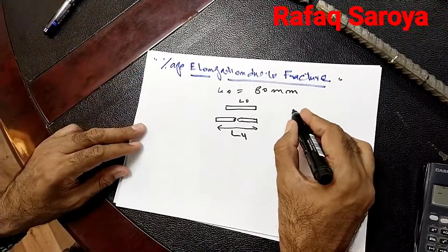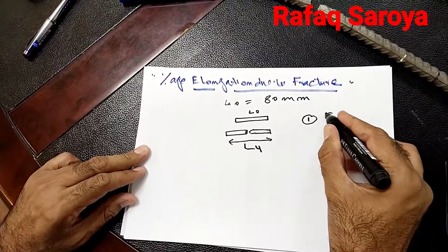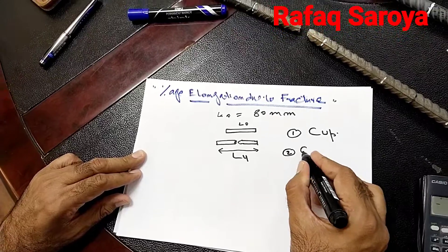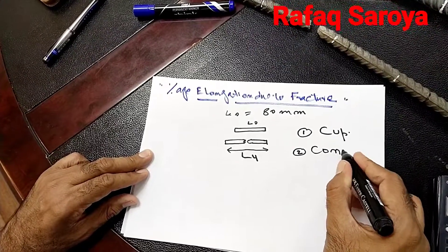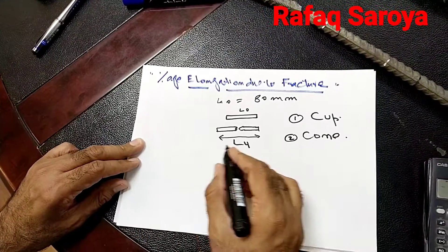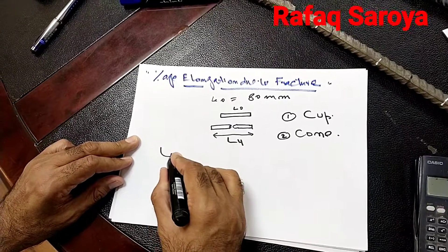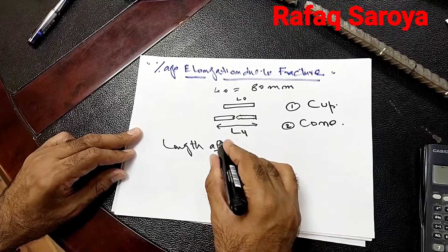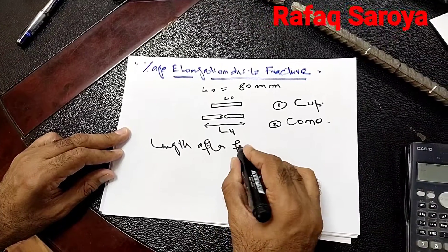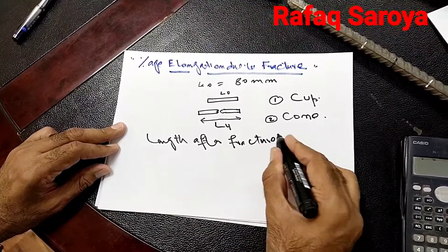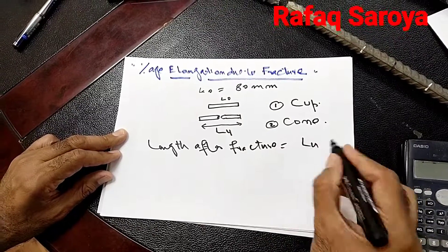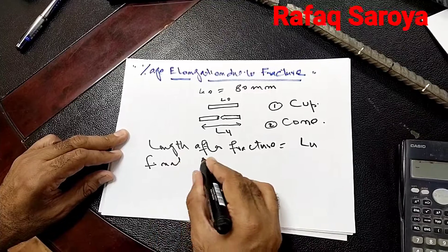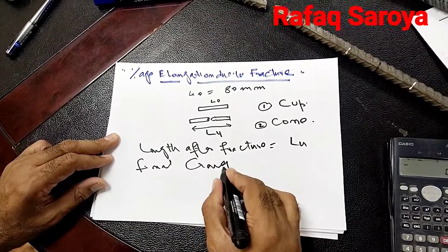These two ends — one end is known as a cup and the other end is known as a cone. The total length after fracture is represented by LU, also known as the final gauge length.